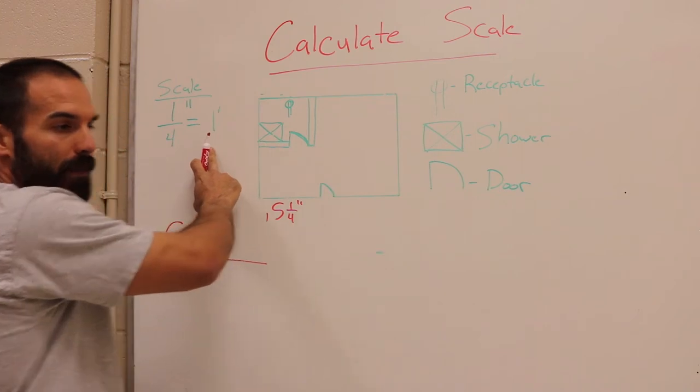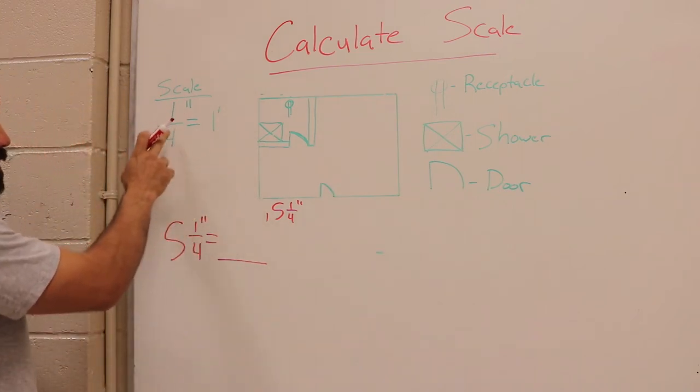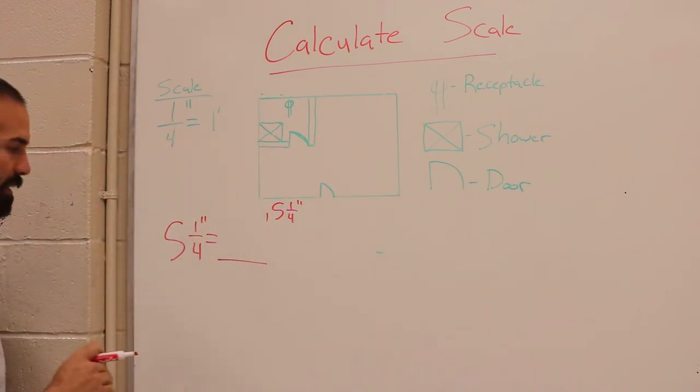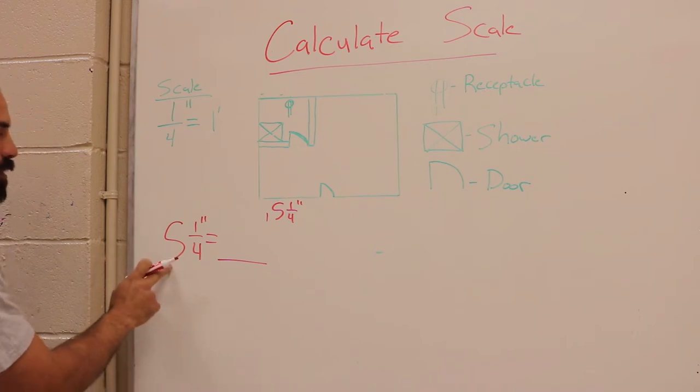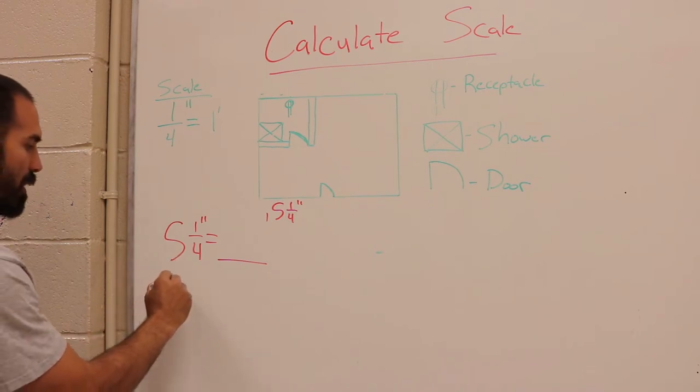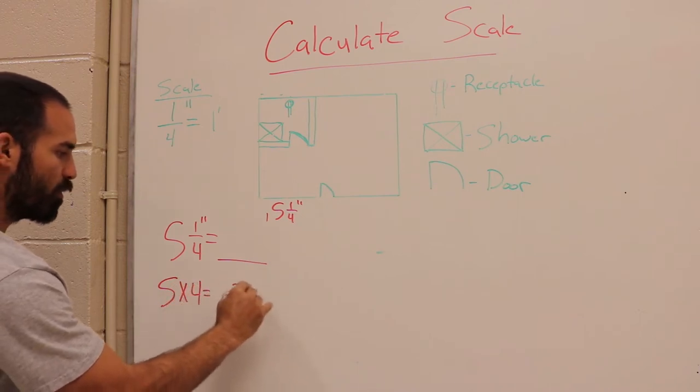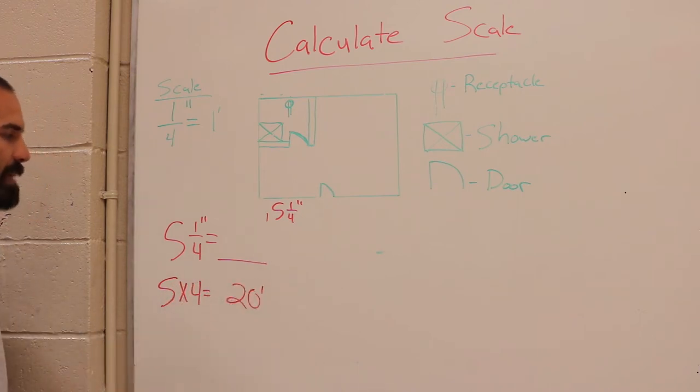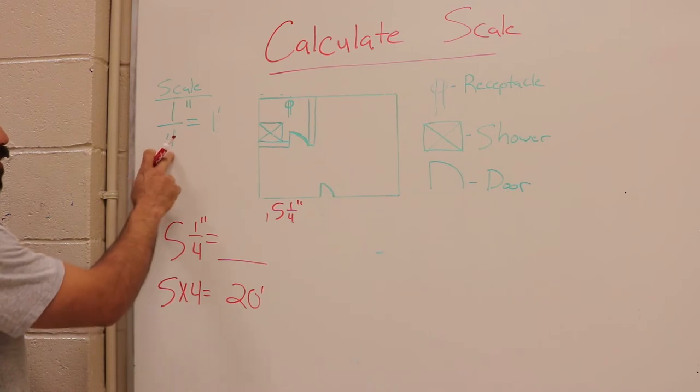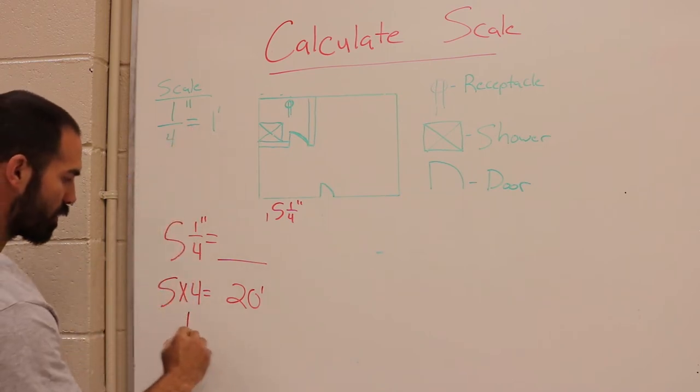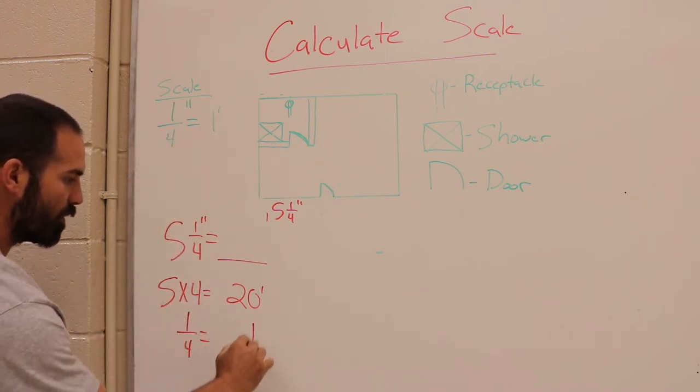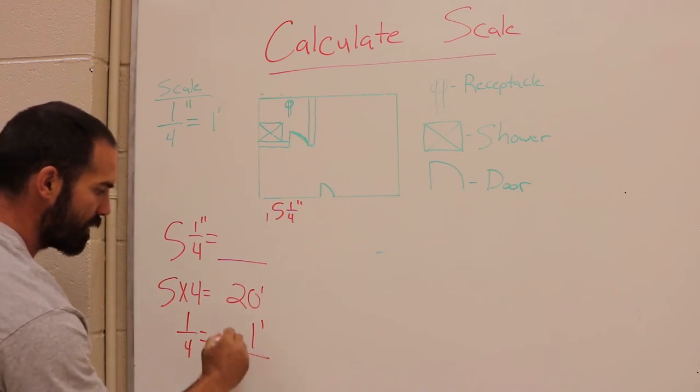Well, we know a quarter of an inch equals a foot. So what I'm going to do is take my denominator of my measurement, which is 4, and multiply it by my whole number here, my whole inch. So 5 times 4 equals 20. That's 20 feet. And then we know a quarter of an inch equals a foot, so a quarter of an inch equals one foot, and then you just add those up right there. That gives you 21 feet.